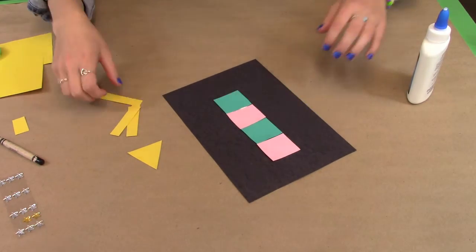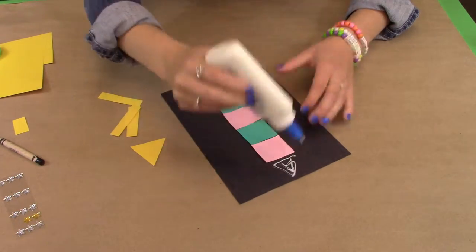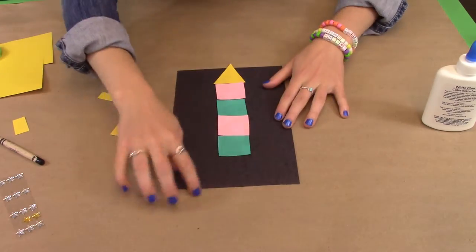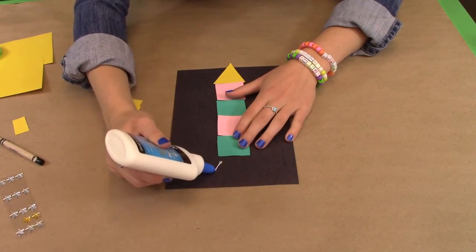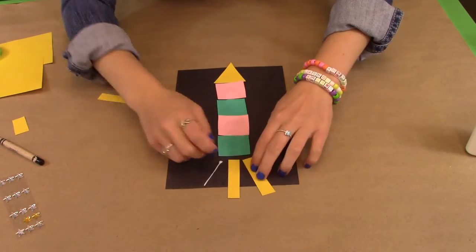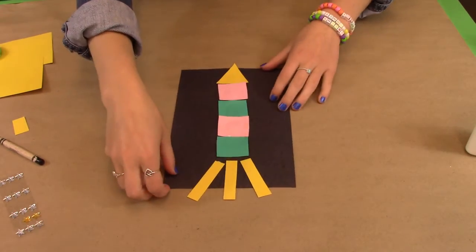Next I'm going to add the glue to add on my yellow details: the triangle for the top of my rocket ship and the three skinny rectangles for the blast-off lines, just like this. It's okay if the decorations hang off the edge of the paper like I have it here.